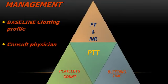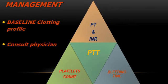At the top of the management pyramid is baseline clotting profile assessment and consultation with the primary care physician or hematologist. The baseline clotting profile includes prothrombin time (PT and INR), partial thromboplastin time (PTT), platelet count, and bleeding time. The INR — international normalized ratio — was introduced to eliminate variations between different laboratories and reagents. It is the ratio between the patient's PT and the standard control PT. The reference range for PT is 11 to 12.5 seconds, and for INR, 0.8 to 1.1.